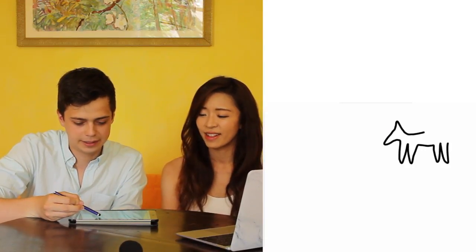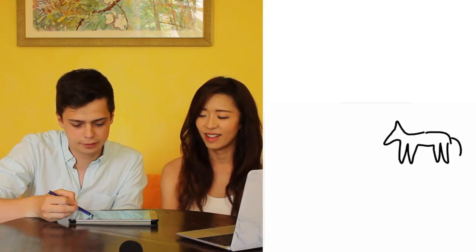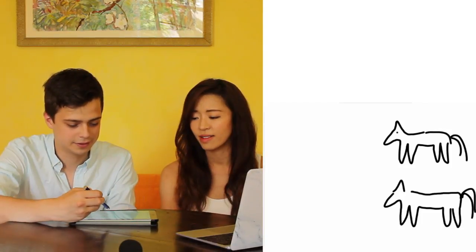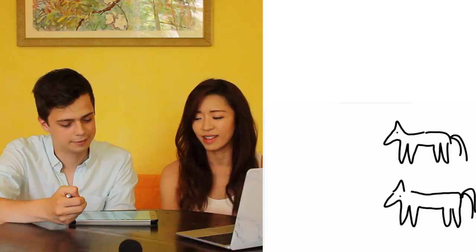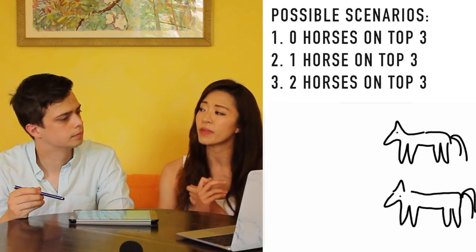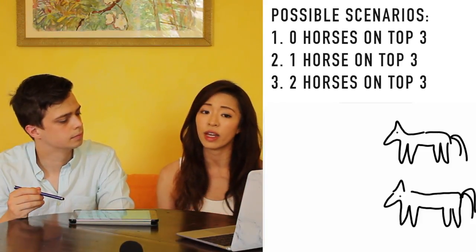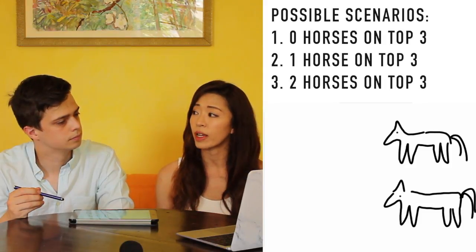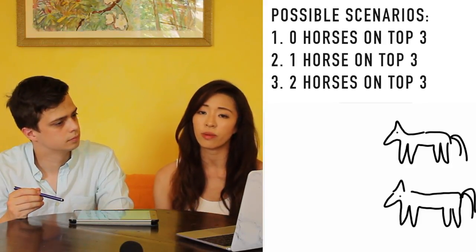Well, that's quite tricky but let me think about it. Okay, so just draw a horse to help illustrate the problem. You have to draw 20 horses then! Oh well, let's just draw one to start off with — or two, since we're betting on two. What are the different scenarios? You can have no horse placing in the top three, one horse placing in the top three, or two horses placing in the top three.